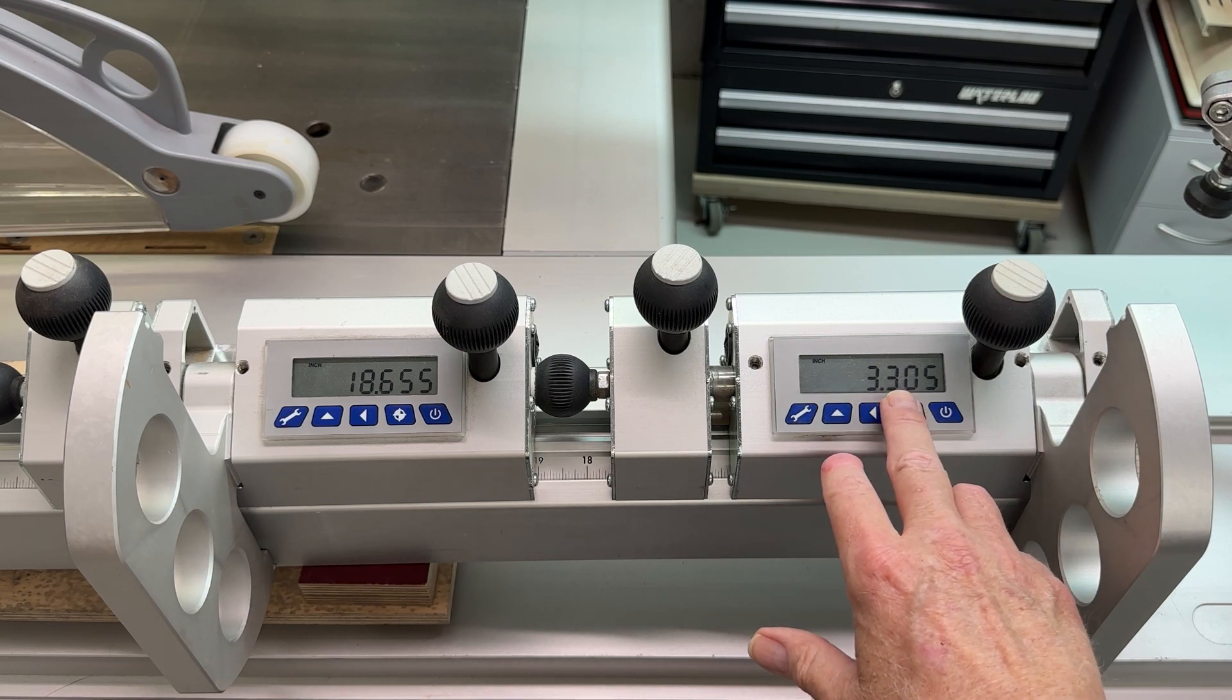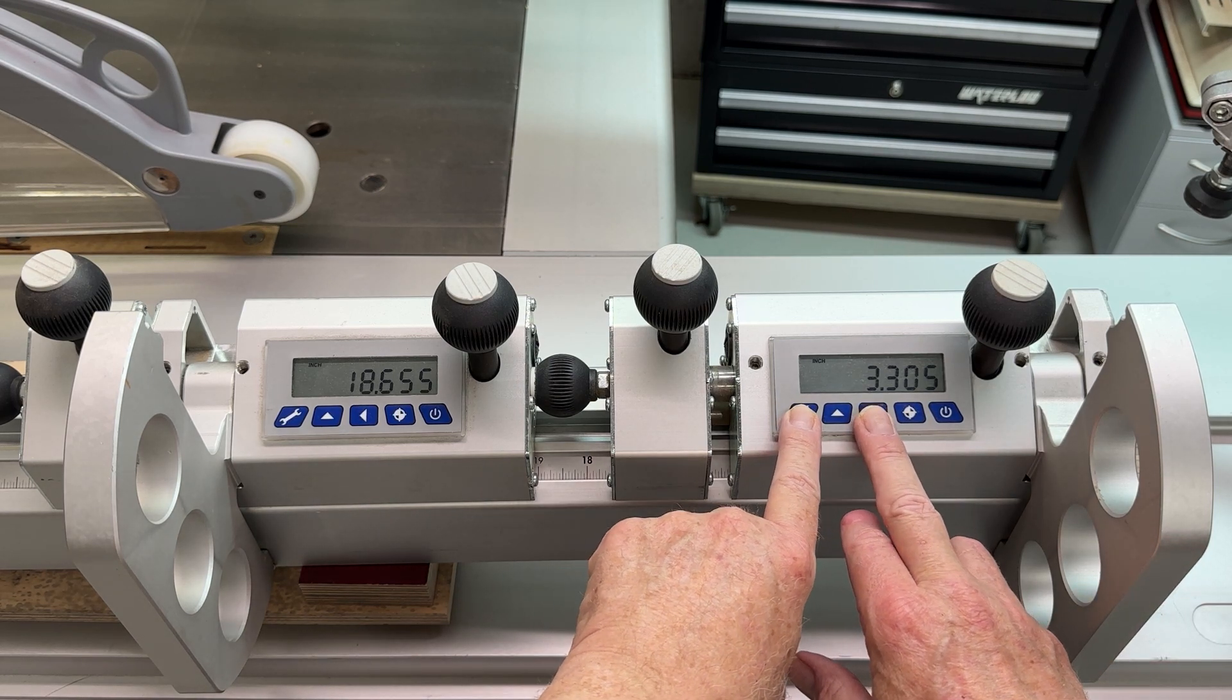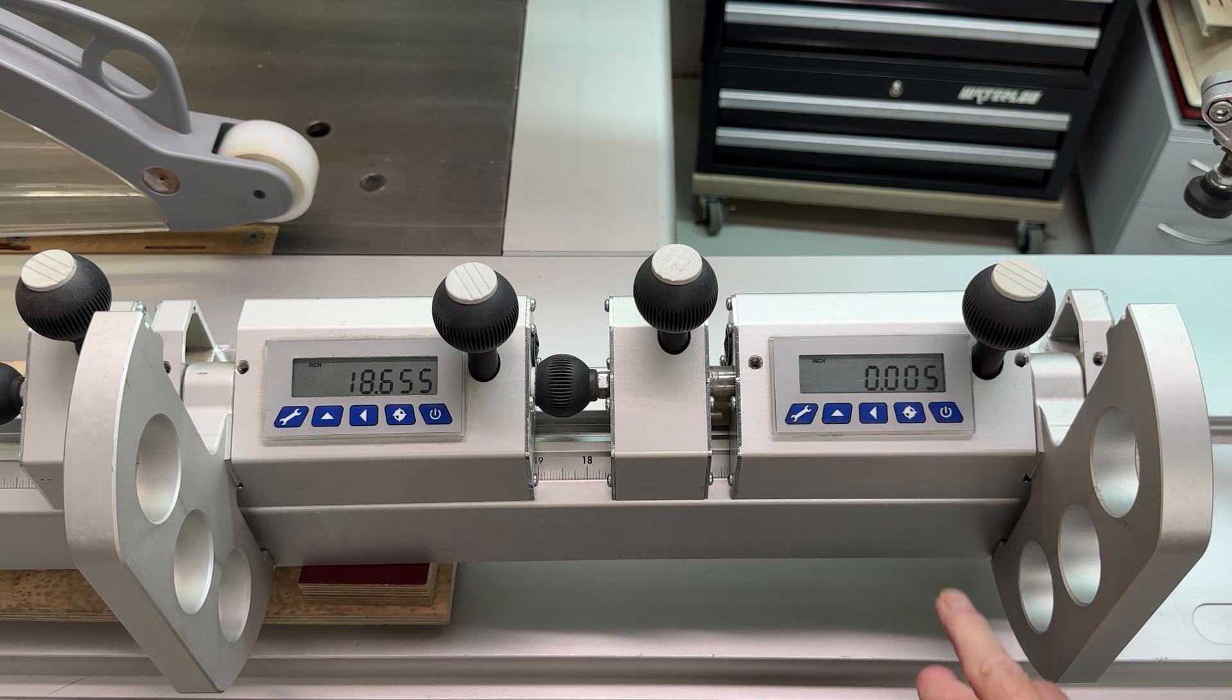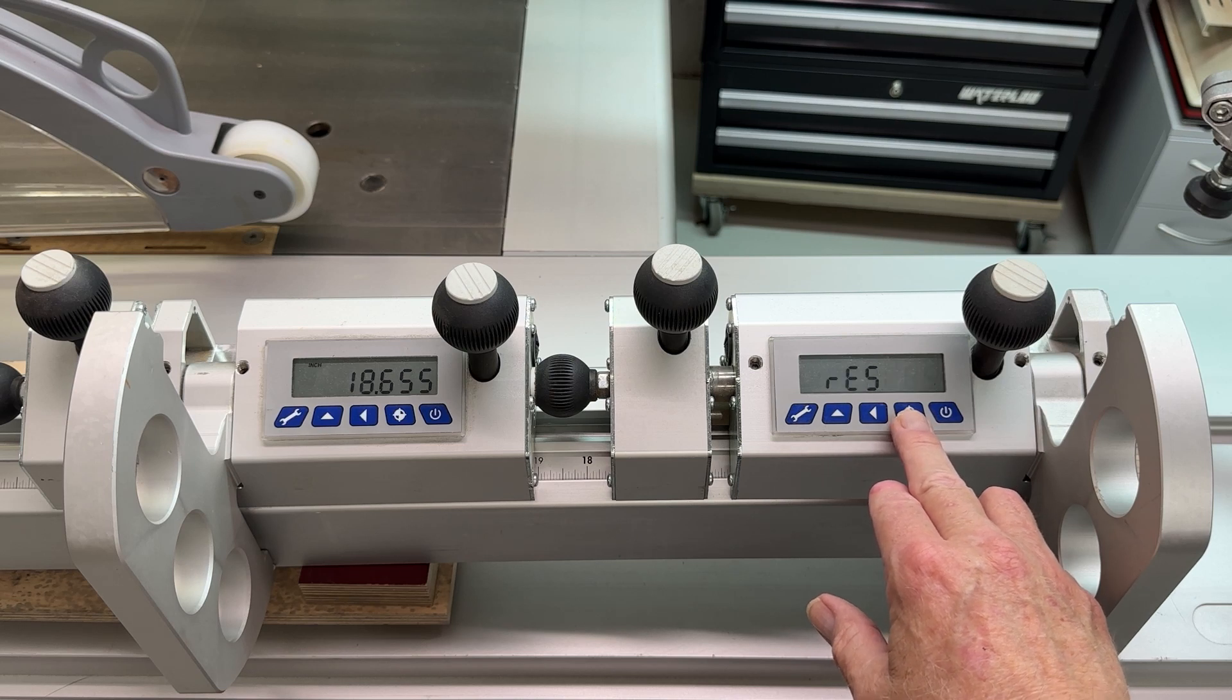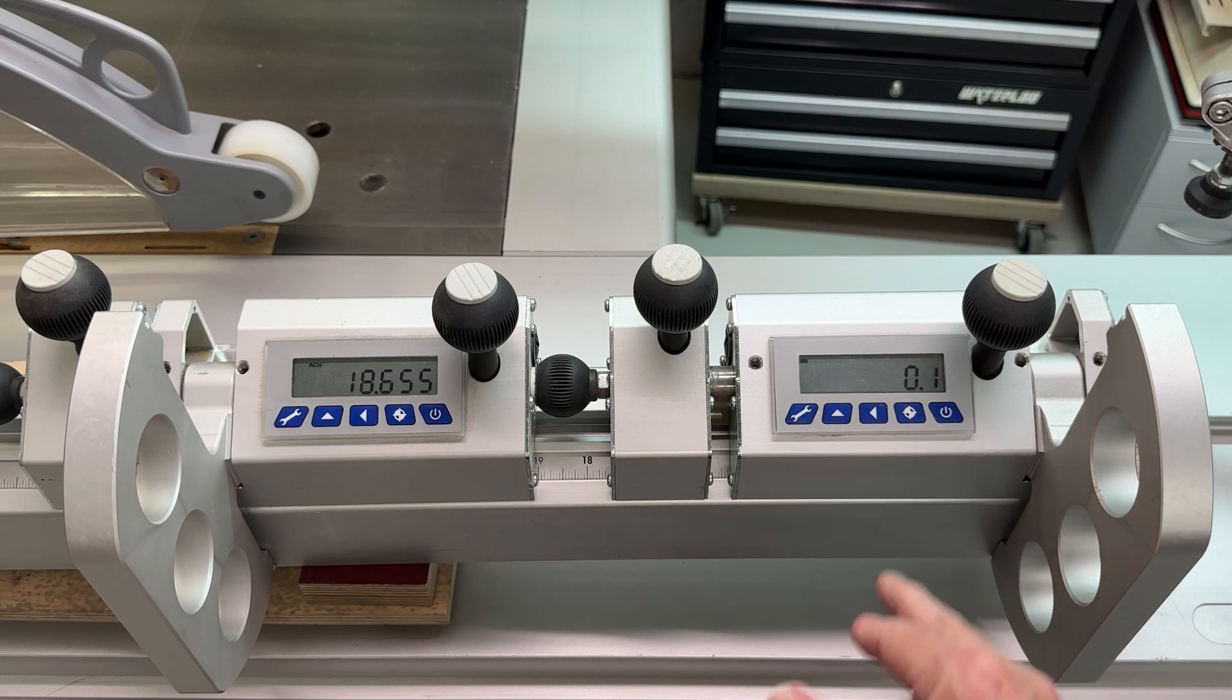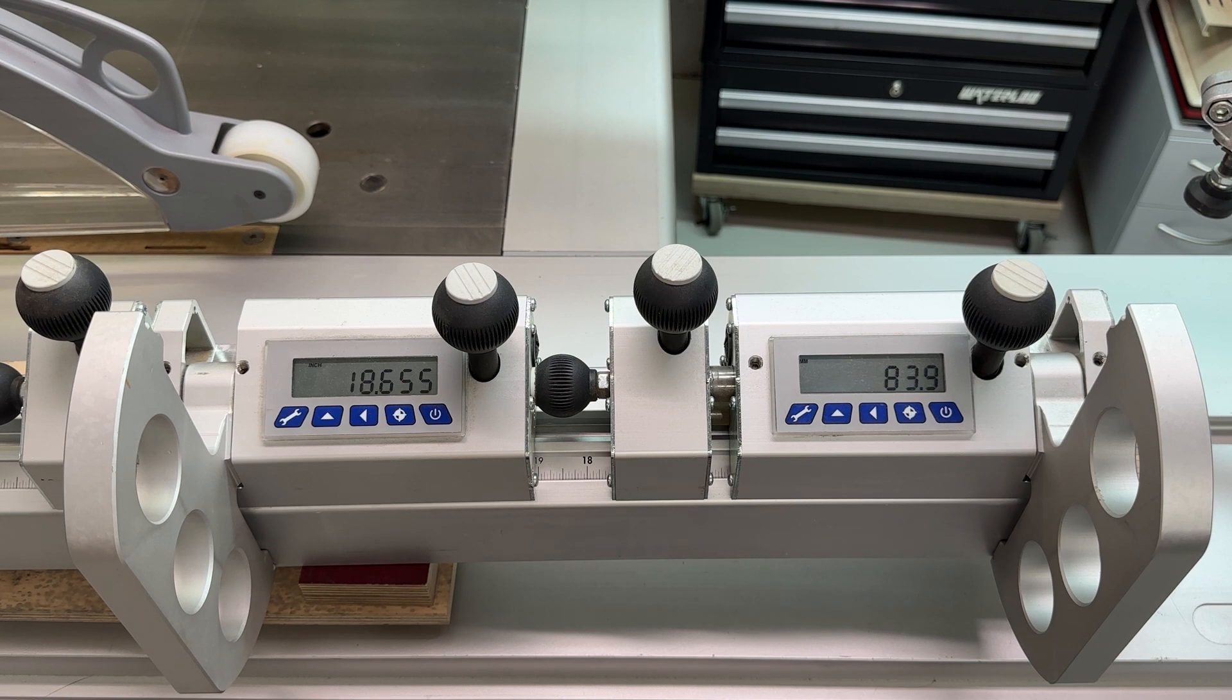So let me just show you. Right now I'm reading 3.305 inches on the right hand flipper stop. Let's change our resolution here from five thousandths of an inch. We'll go to a tenth of a millimeter. 83.9, I think you'll find that 3.3 inches is 83.9 millimeters.